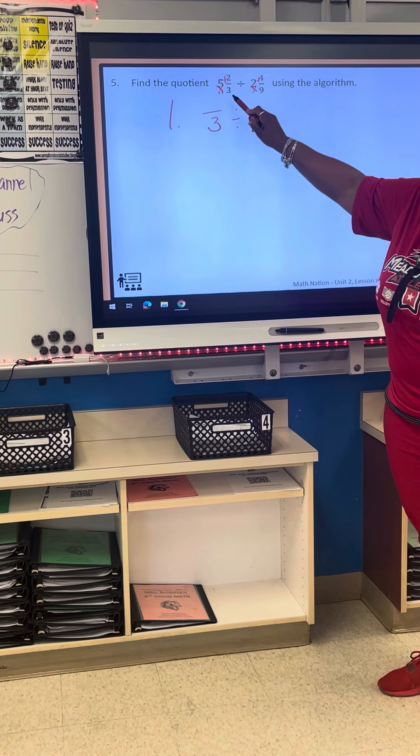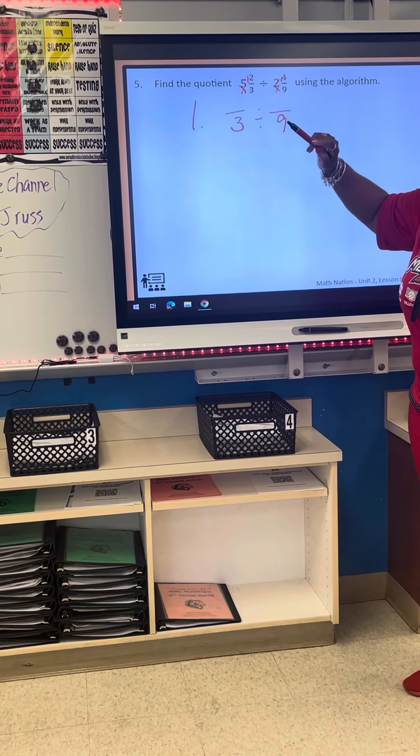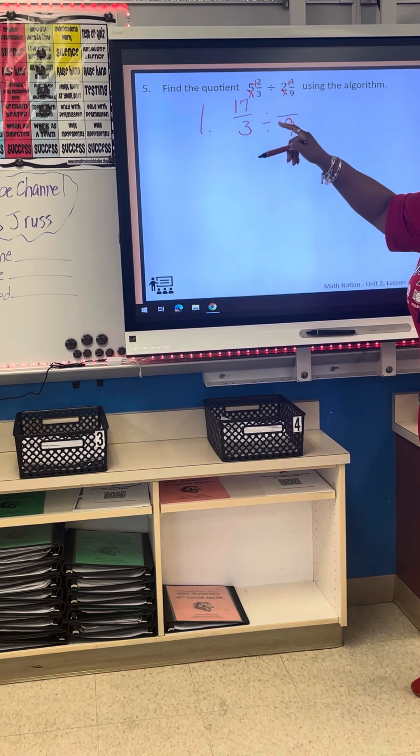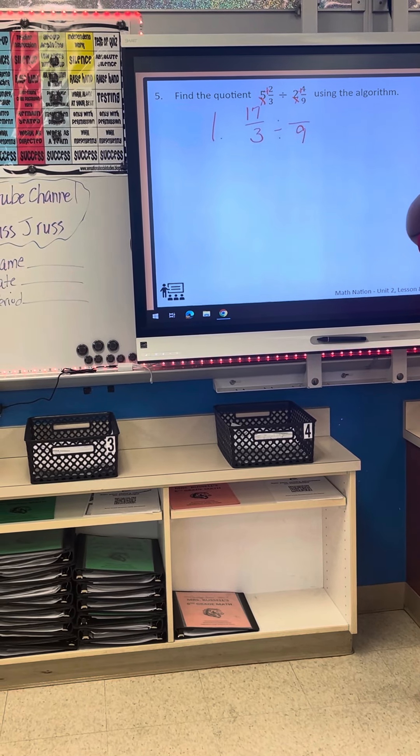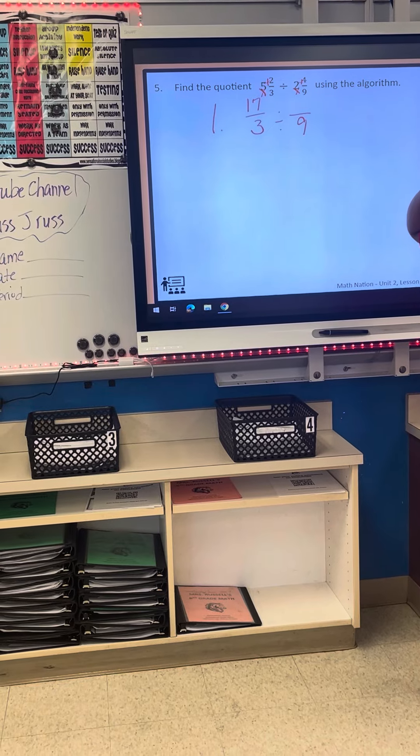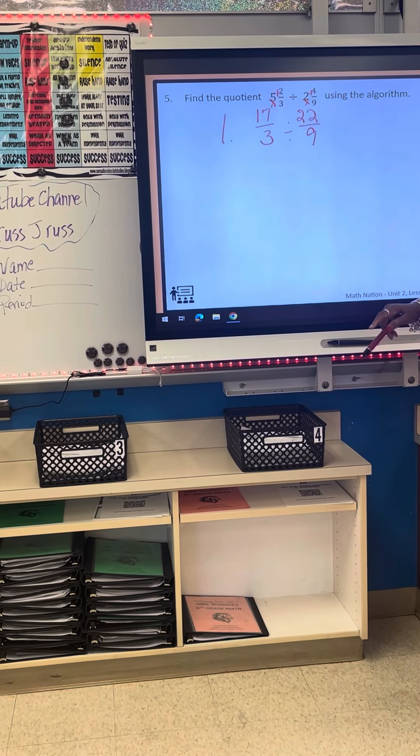Then I'm going to do the math. Five times three is fifteen. Plus two, seventeen. Then nine times two is eighteen. Plus four, twenty-two. That's step one.